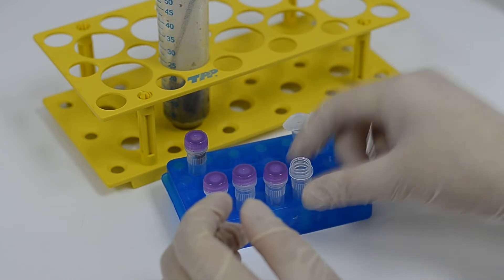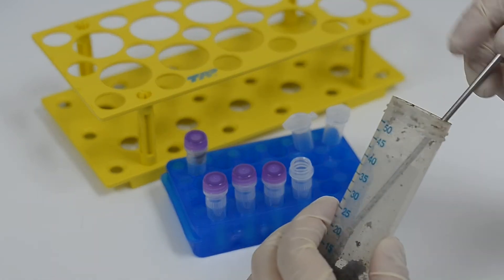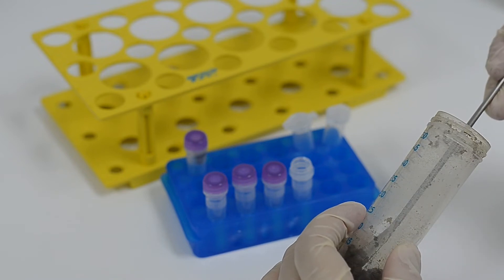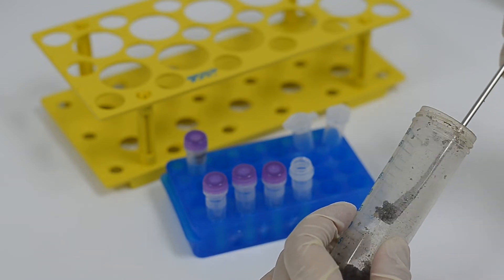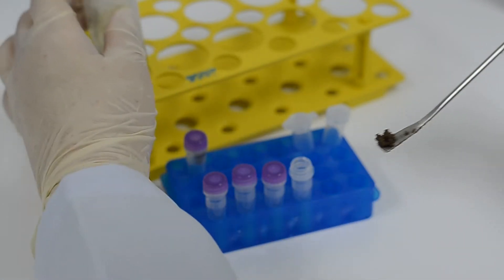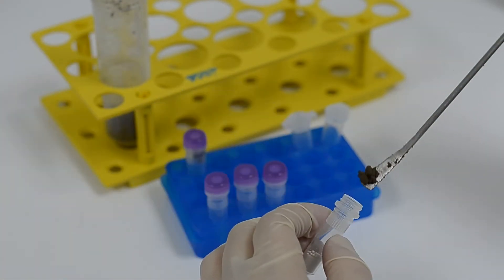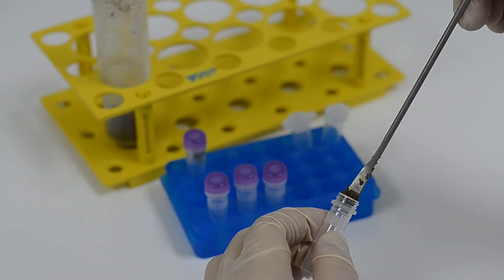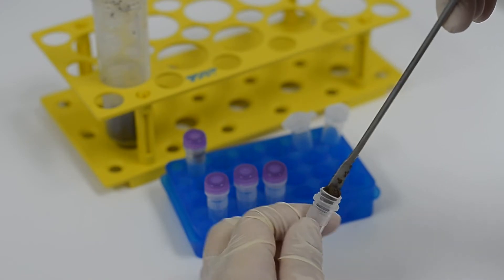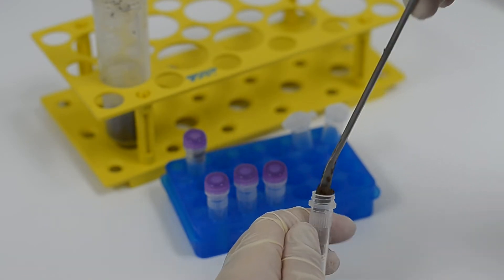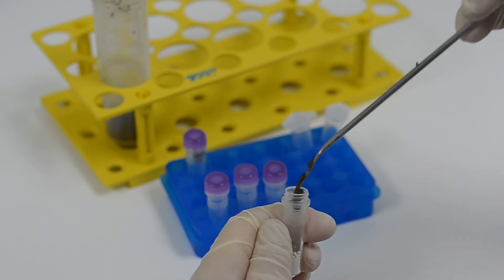To begin sample processing, add 100 to 500mg of soil sample into a lysing matrix E tube. Ensure that there are one-third to one-quarter of empty space remaining in the tube.